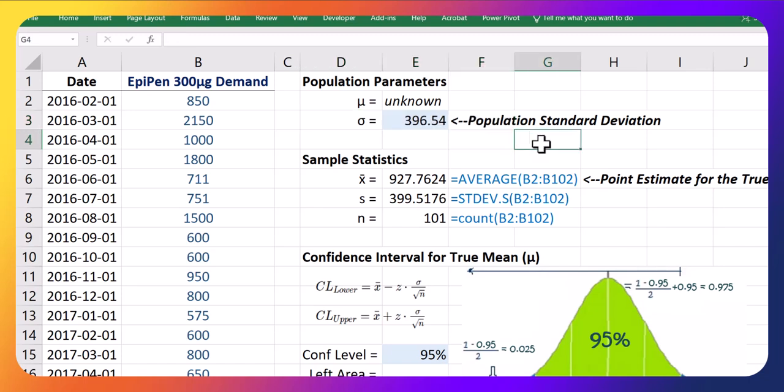Little note, this is a less likely case than when the population standard deviation is unknown. That's more common.